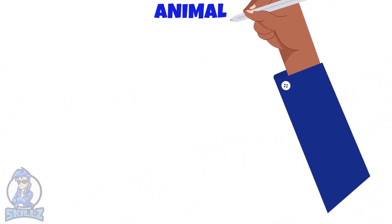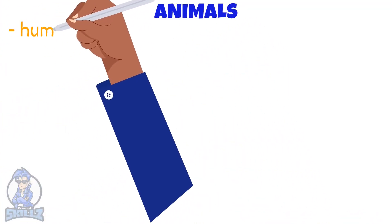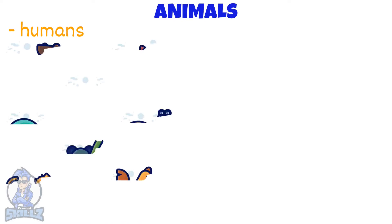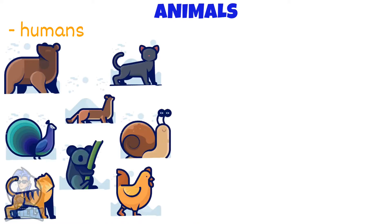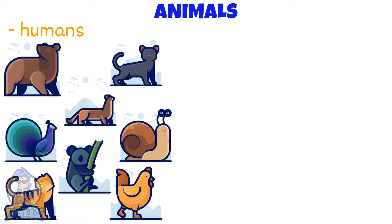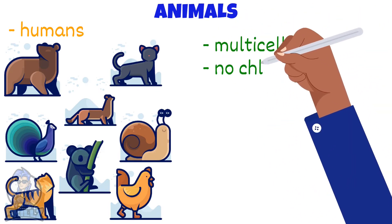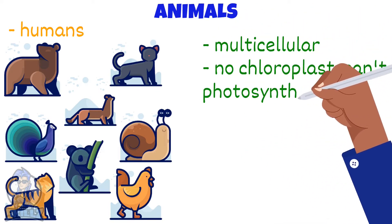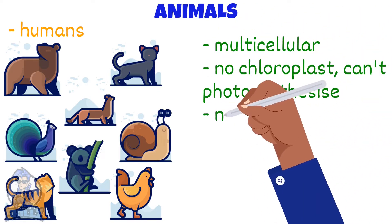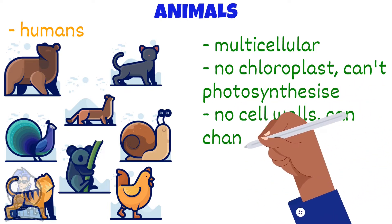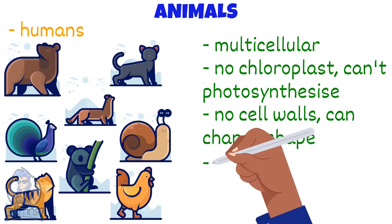Photosynthesis uses light energy to convert simple molecules to complex organic substances, such as cellulose, starch and sucrose. Humans, or Homo sapiens, come under the animal group. All animals are multicellular. They don't contain chloroplasts, so they can't make their own food. They don't have cell walls either, which allows the cells to change their shape. They store carbohydrates as glycogen.